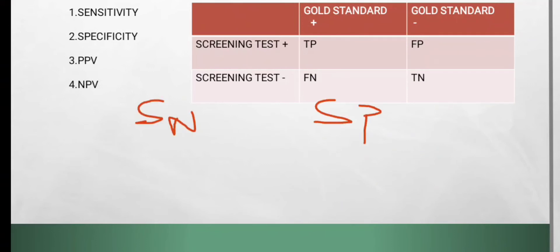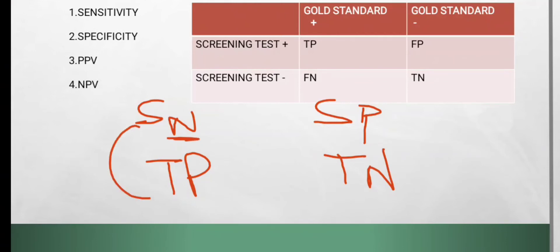A quick mnemonic to remember sensitivity and specificity: sensitivity identifies true positive, and specificity identifies true negative. So P and N stay together — sensitivity goes with true positive, specificity goes with true negative.